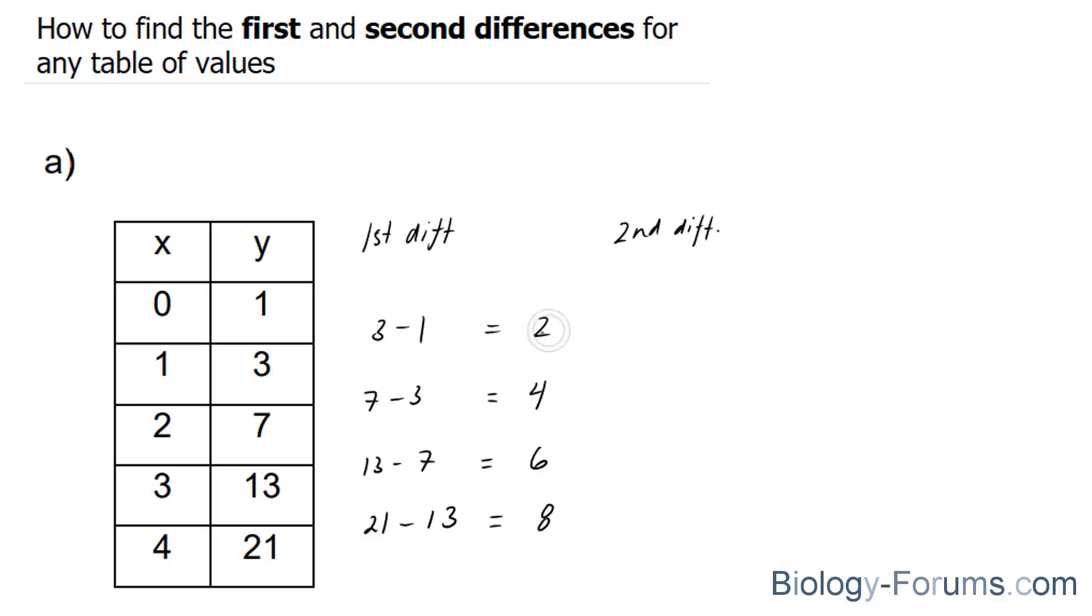And what we'll do is subtract these. So 4 minus 2 is equal to 2. 6 minus 4 is equal to 2. 8 minus 6 is equal to 2.